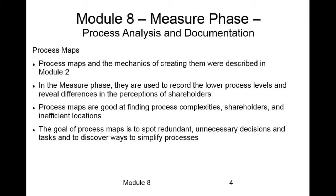For example, a particular process might be done over in the marketing department because they need input from those people, so we have to include them. And the goal, of course, is to look at redundant and unnecessary decisions and tasks, and ways to simplify. Later on, we'll talk about how we identify value-added and non-value-added activities and how we can cut waste in order to make our processes more efficient. However, all this has to start with a detailed process map so we understand what we're doing today and know where to focus our efforts.